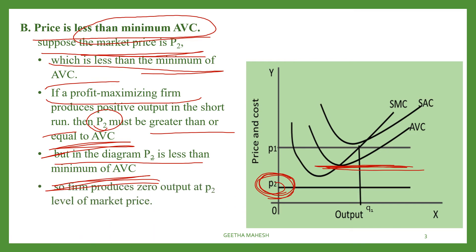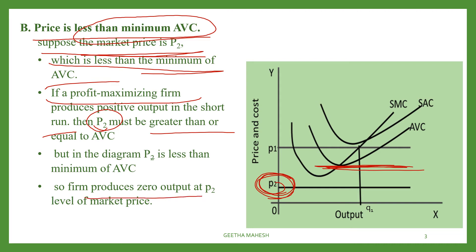Because P2 is less than minimum of AVC, the firm is not going to produce anything — the firm is going to produce zero output at P2 level of market price.